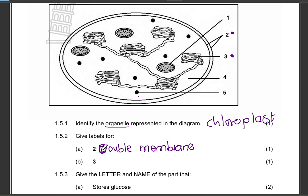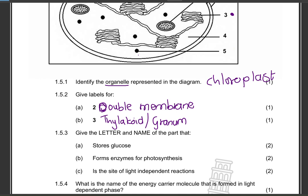Structure three is the thylakoid. If you say granum, that is also correct. The thylakoid is the disc that contains the chlorophyll pigment, and the granum is basically a stack of those discs.